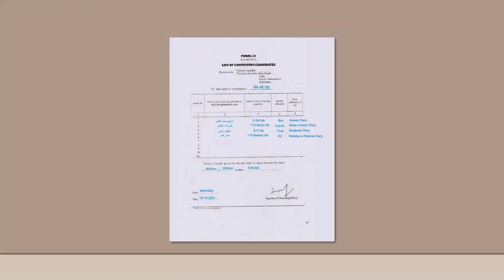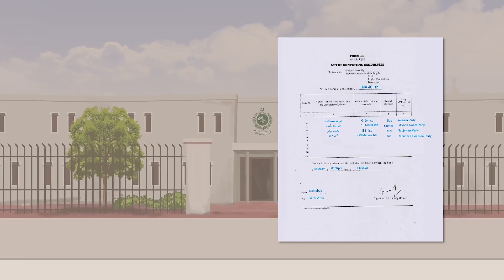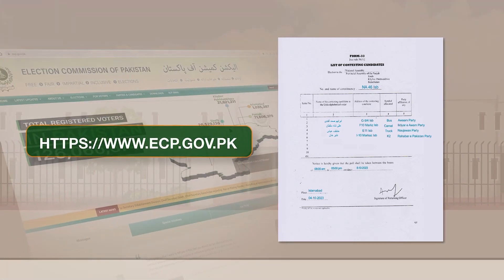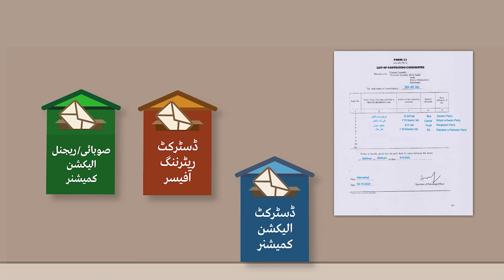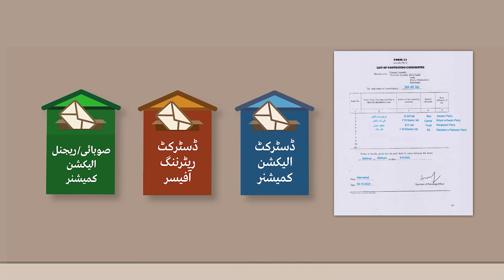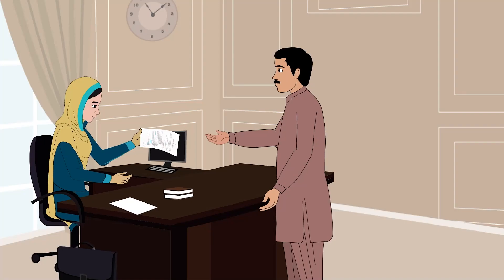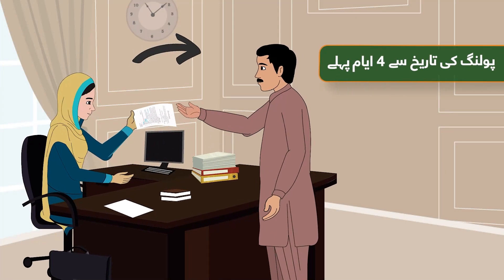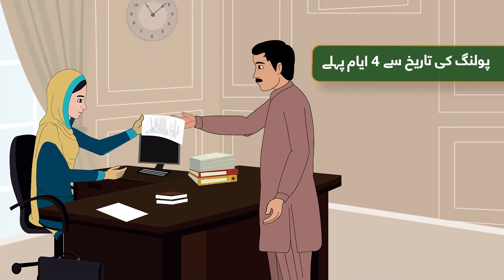On the day following the date of withdrawal of nomination papers, the Returning Officer will allot election symbols to all the candidates. Form 33 will be compiled as per Urdu alphabetical order and the list of final candidates on Form 33 shall immediately be sent to the Election Commission, which shall publish it on its website. A copy will also be provided to the concerned Provincial Election Commissioner, Regional Election Commissioner, District Returning Officer, and District Election Commissioner. Under Section 72, candidates can retire from the election by submitting a written request to the RO four days before the polling date, using a handwritten notice bearing their signature.